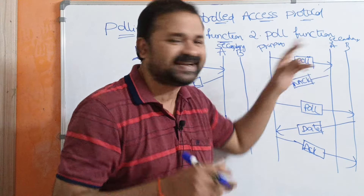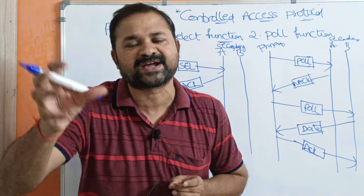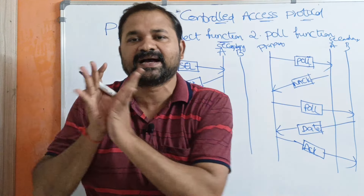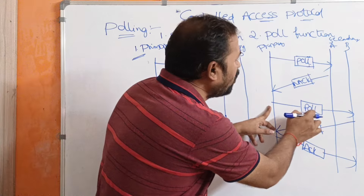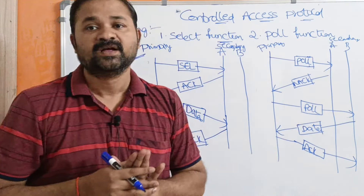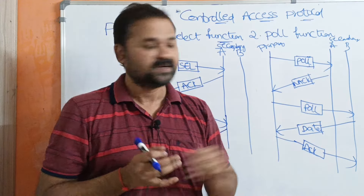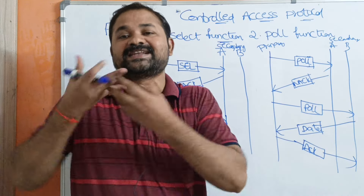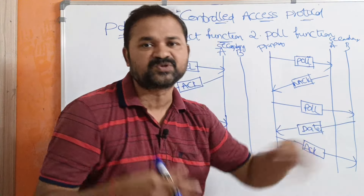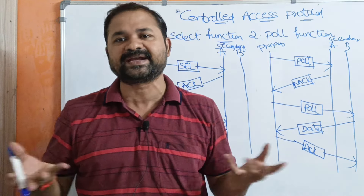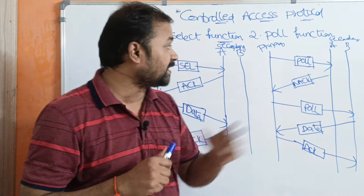Assuming device A has no data to send, it returns a NACK (negative acknowledgement). So the primary device then sends a poll request to secondary device B. Assuming B has data to send, B sends the data to the primary device. After receiving the data, the primary device provides an acknowledgement to secondary device B.